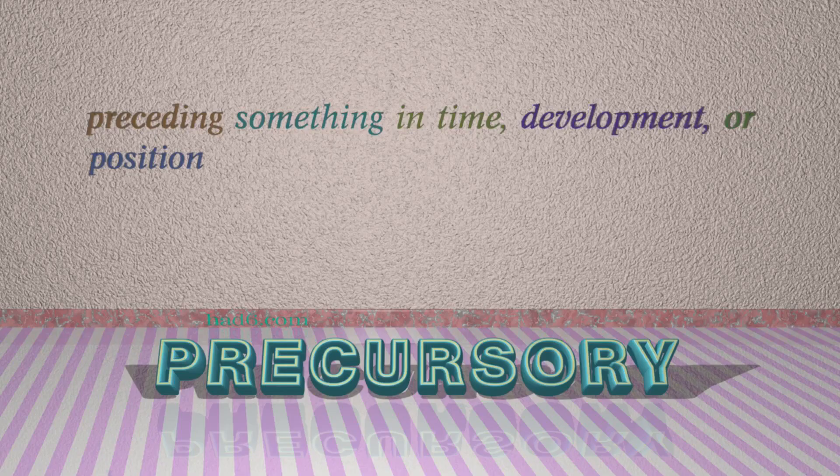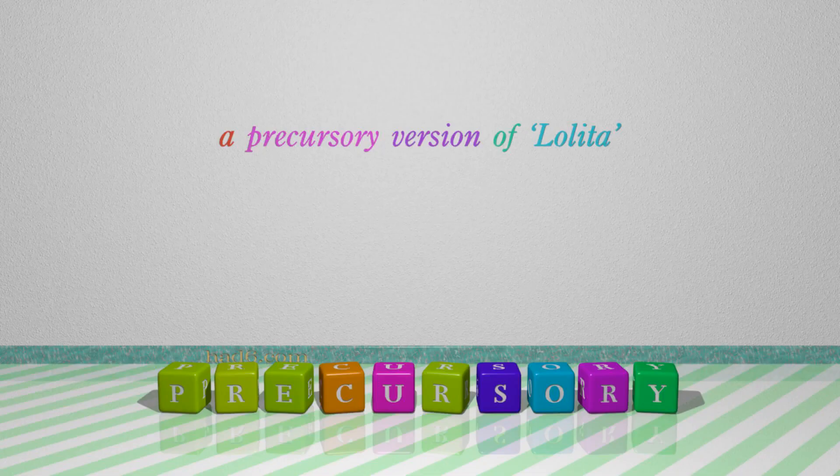Number 5: Precursory. Which means preceding something in time, development, or position. For example: A precursory version of Lolita.